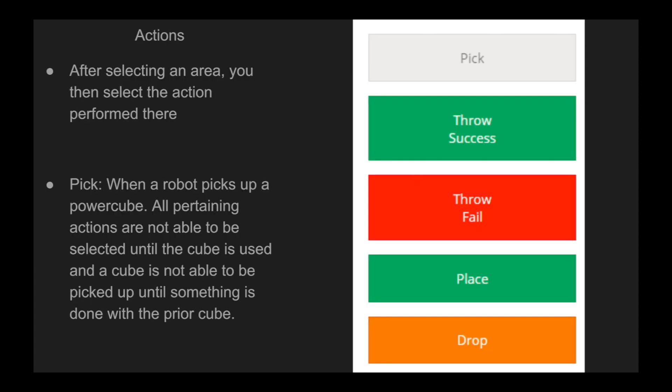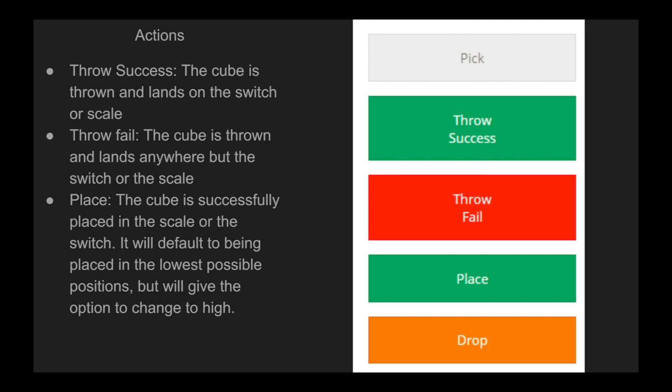After you select an area, you then select the action performed there. The actions are: pick, throw success, throw fail, place, and drop. Pick is when a robot picks up a power cube. All pertaining actions are not available until the cube is used, and a cube cannot be picked up until something is done with the prior cube. Throw success is when the cube is thrown and lands on the switch or scale. Throw fail is when the cube is thrown and lands anywhere else. A place is when the cube is successfully placed in the scale or switch — it will default to the lowest possible position but will give the option to change to high. For example, when you click place in the scale, it will say placed low in the history, but the small place button will change to place high, and if they placed high, simply tap it again and it will change to place high.